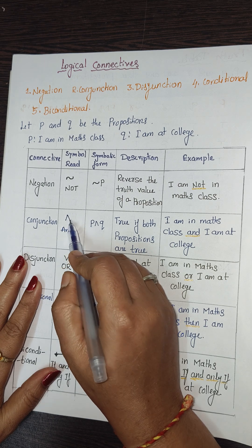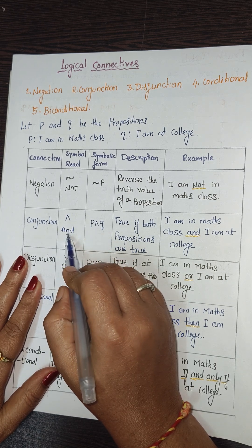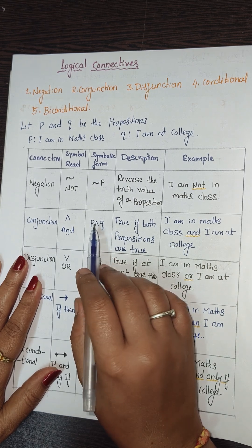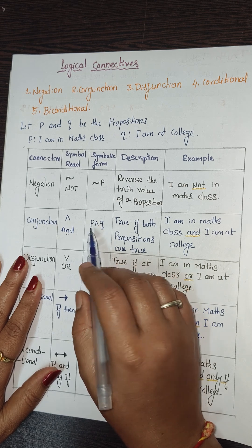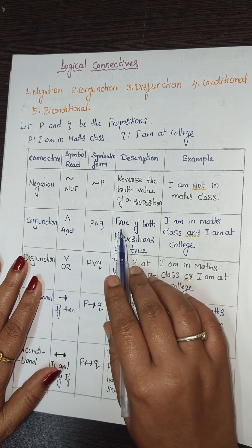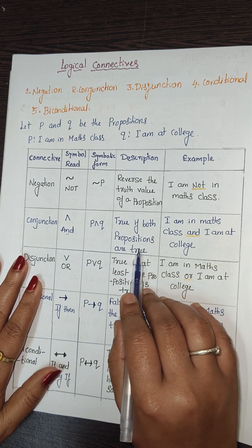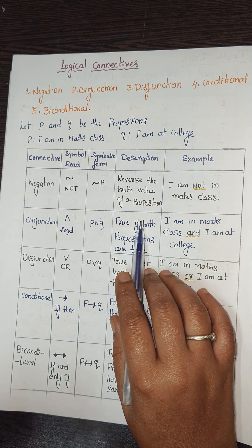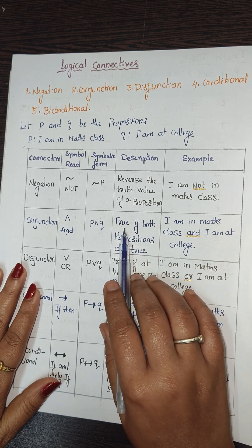The next connective is conjunction, denoted by the symbol ∧ (an inverted V), and read as 'p and q.' The conjunction is true only when both propositions are true; otherwise, it is false.